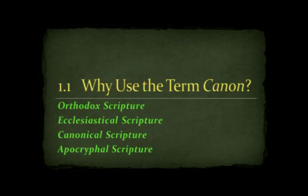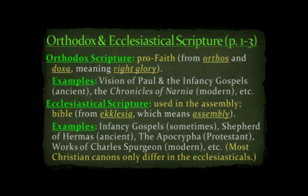So those are the kinds of questions we're going to be dealing with. Let's go ahead and get into this. First section — the question of why use the term canon. We are going to look at four definitions that are important to this topic: the definition of Orthodox Scripture, Ecclesiastical Scripture, Canonical Scripture, and Apocryphal Scripture. So first, Orthodox and Ecclesiastical Scripture — if you're reading the large print edition, that's on pages one through three.